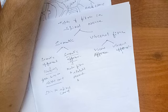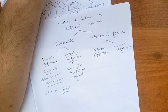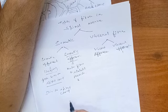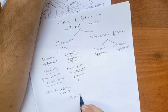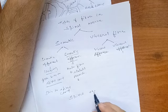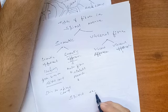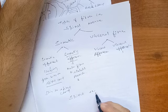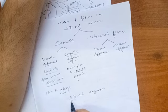There are somatic afferent, somatic efferent, visceral afferent, and visceral efferent fibers. Now, what are the spinal segments? On the basis of the origin of the 31 pairs of spinal nerves, the spinal cord is divided into 31 spinal segments.